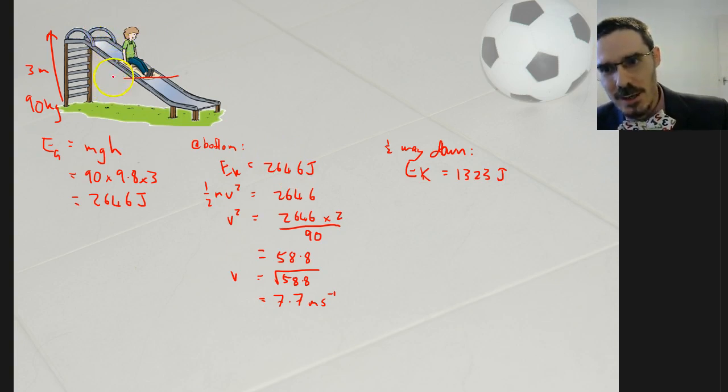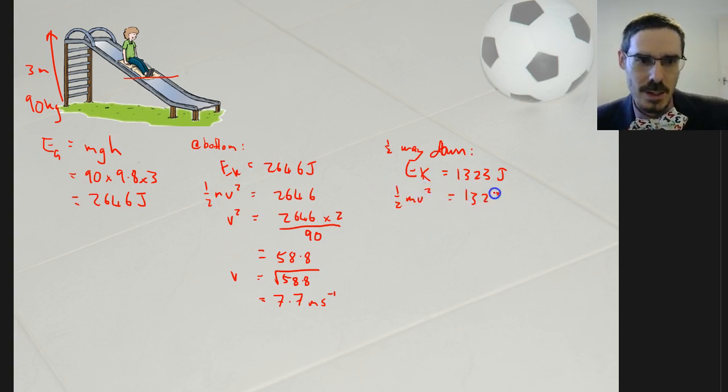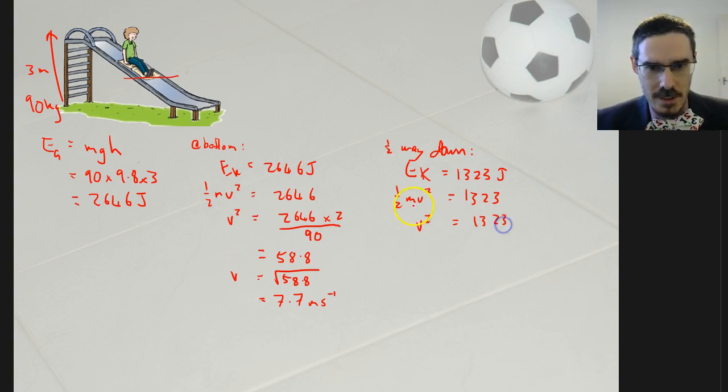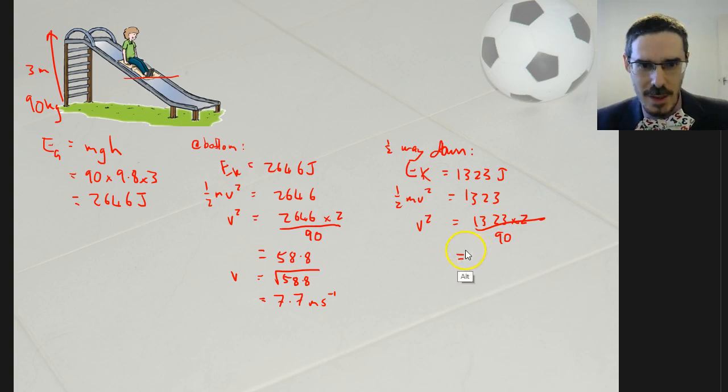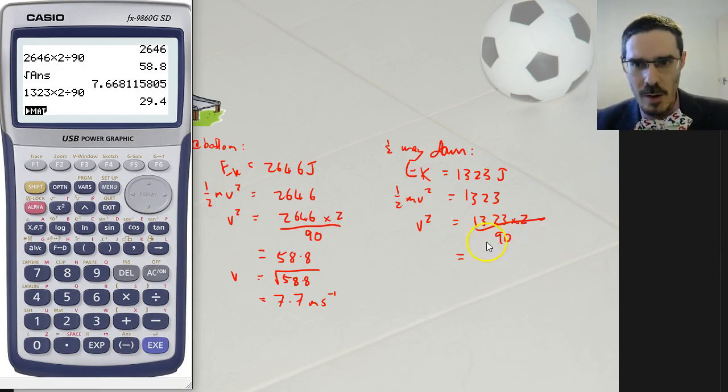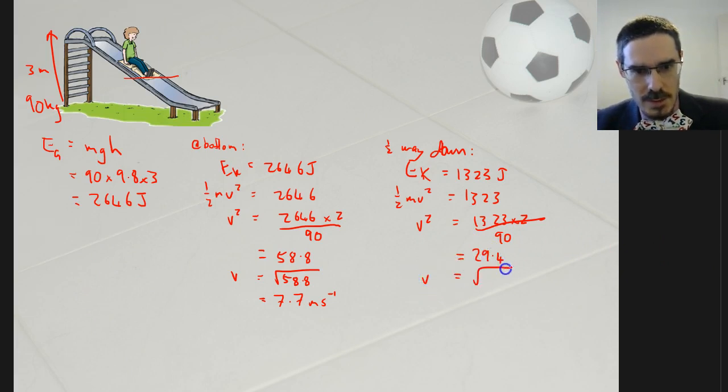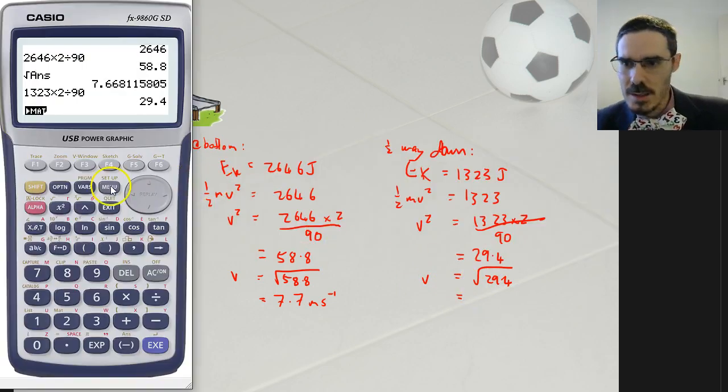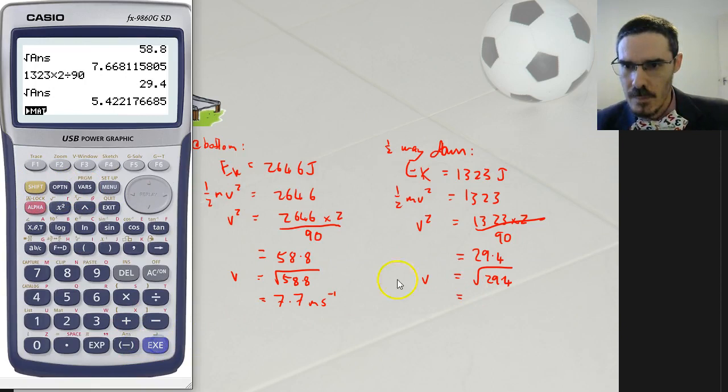The gravitational potential energy goes linear with the height. So I've lost half the gravitational energy. It's now become kinetic energy. I've got half of that kinetic energy. That's half mv squared, 1,323. So v squared, like we had before, is going to be 1,323 times 2 divided by the mass, 90. Let me move this over so I can see what I'm doing. 1,323 times 2 divided by 90. 29.4. So v is the square root of that, which is 5.4.